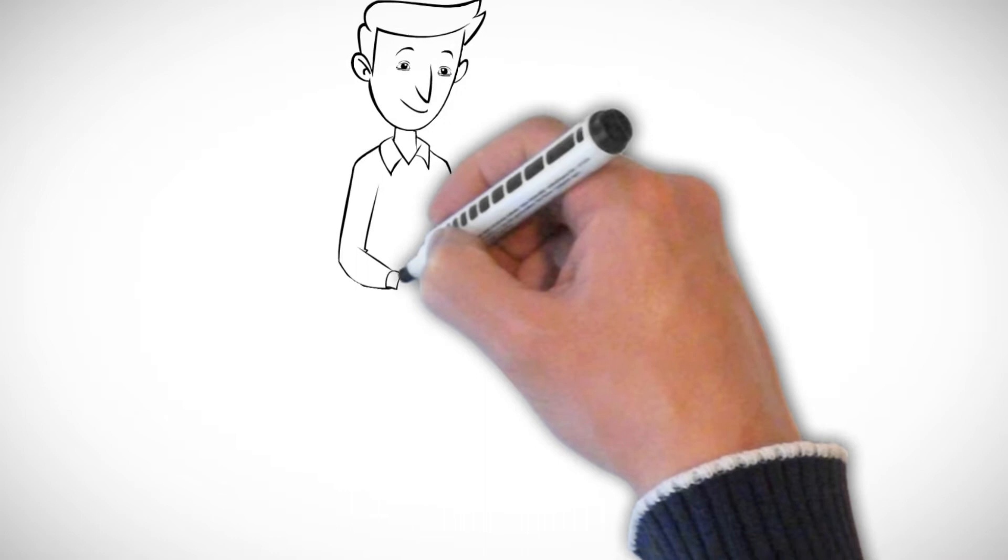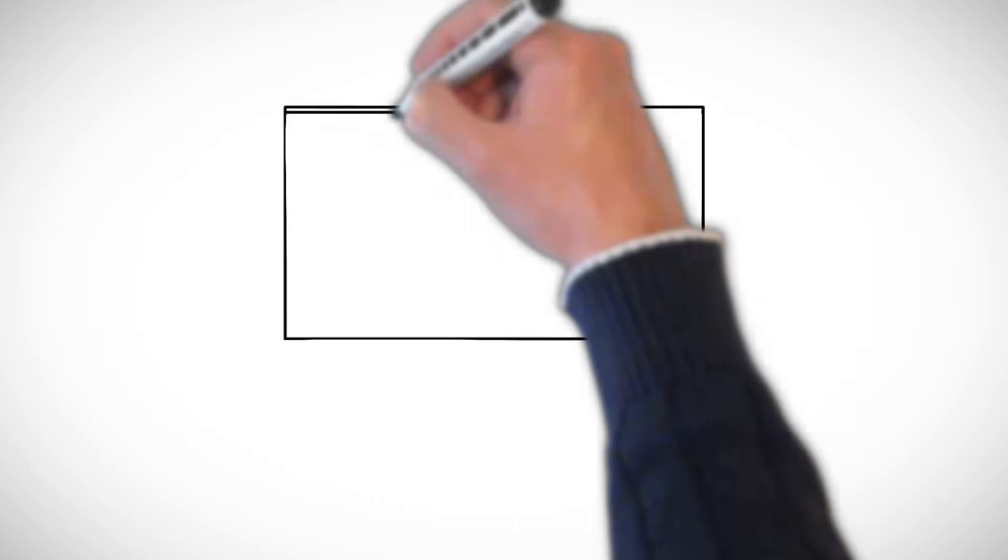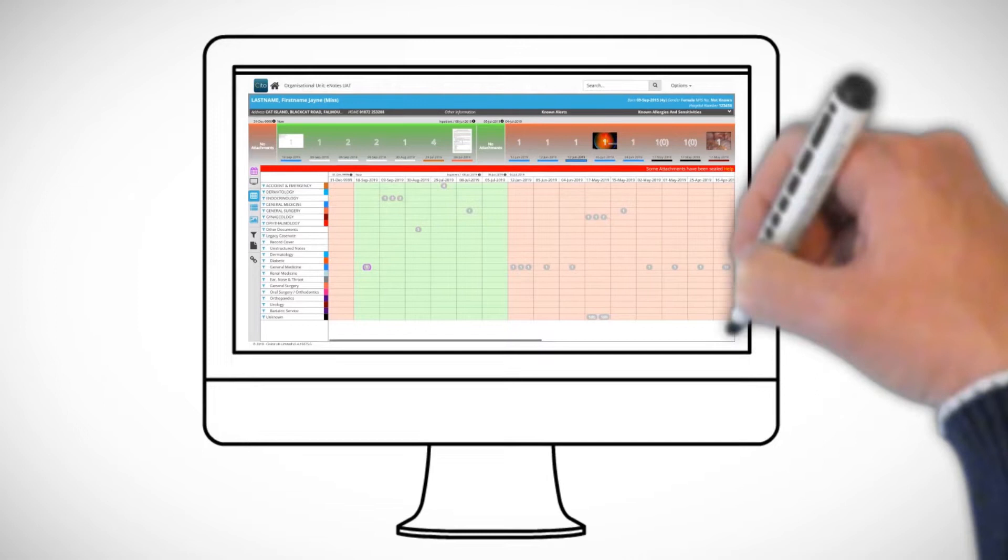The system will enable us to digitize our legacy records. Any new paper we generate will be added to episodic folders and scanned. We will make all of this immediately and fully available to those with access rights in the very intuitive eNotes system.